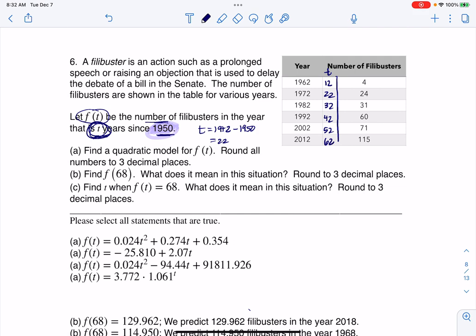I can put these data values into L1 and my number of filibusters into L2. The directions say find a quadratic model. Looking at the options, I can rule out this answer and this answer just on sight. This is a linear model, and that's not what we were asked to find. This is an exponential model, and that's also not what we were asked to find. These two functions are at least quadratics, and I'll decide between the two of those which is the correct one.